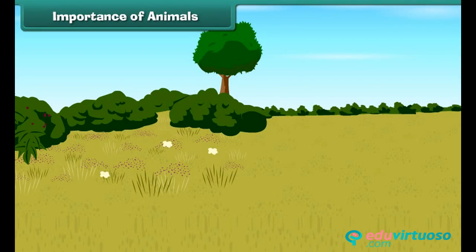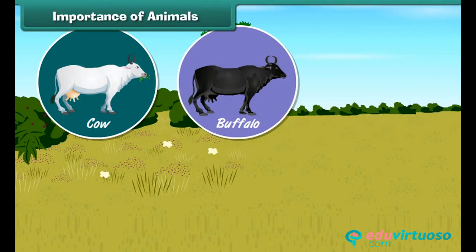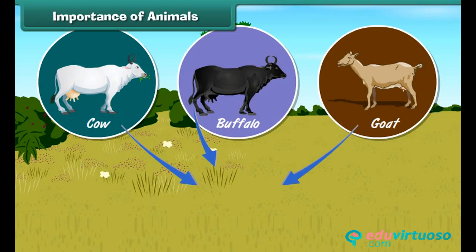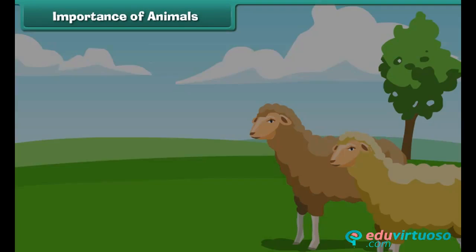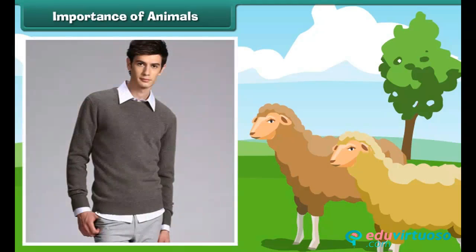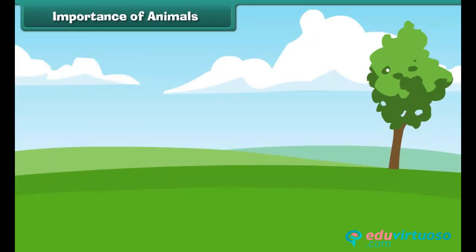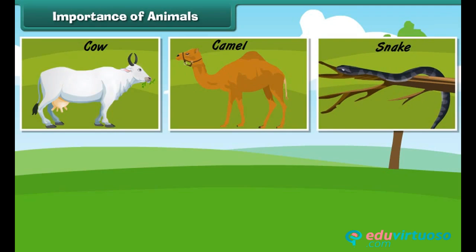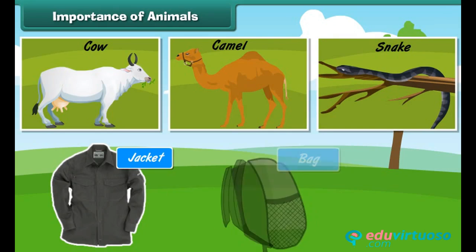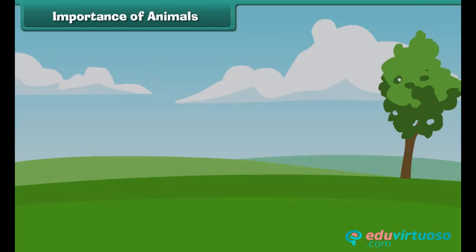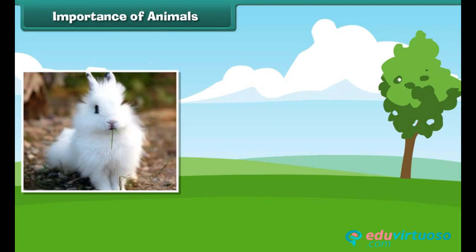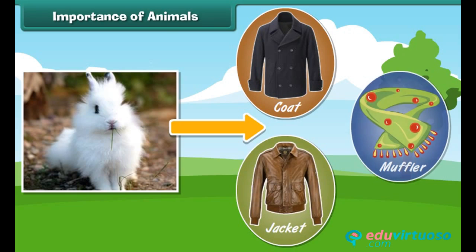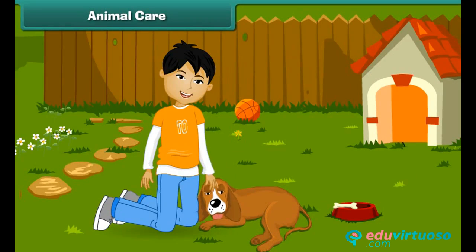Animals help us in many ways. Cows, buffalos and goats give us milk. Sheep give us wool that keeps us warm in winters. Cows, camels, snakes, etc. give us leather for jackets, bags and shoes. Some animals give us fur for coats, jackets and mufflers.